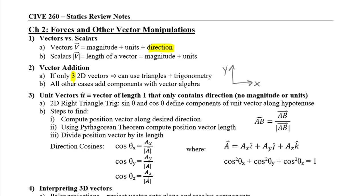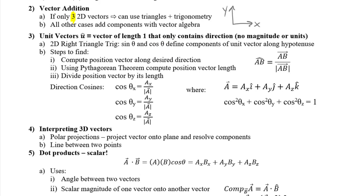We also talked about unit vectors. Unit vectors have a length of only one — they're unitless, not feet, meters, or Newtons. They have a magnitude of one with no units, so fundamentally they are pure direction. If you want to add direction to a vector, you multiply the unit vector times the magnitude and it turns into vector components. In two dimensions, every time you took a sine or cosine of an angle, you were fundamentally creating a unit vector along the hypotenuse.